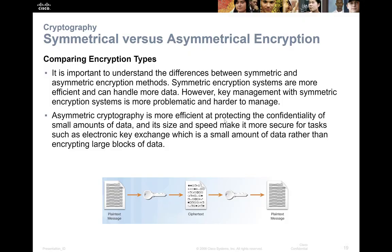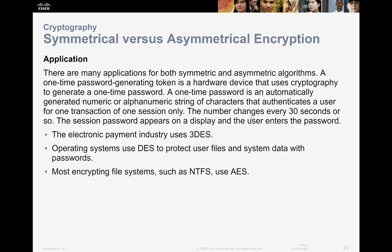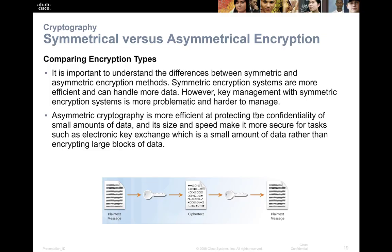IPSec is used for point-to-point or VPNs. You have your plain text and your key, it goes into cipher text, and then you use your key again to get that plain text message back. You have your plain message, you have your key, it goes through that factory, then you have your cipher text that nobody can read. It's not until the key is applied at the other end of the conversation that you're able to read it.